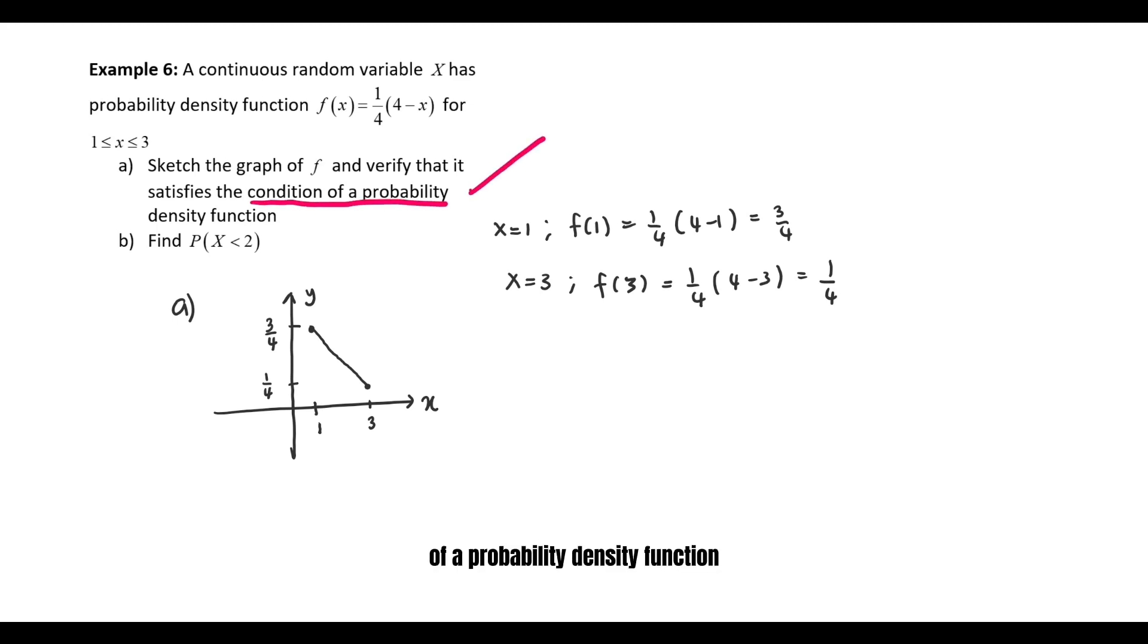If we want to verify that f satisfies the condition of a probability density function, it must be f(x) is always greater than or equal to 0, and the integral of f(x) from minus infinity to positive infinity is 1. From the graph we can clearly see that the graph is above the x-axis, which means the output of the graph is greater than 0 for any input of X between 1 and 3.